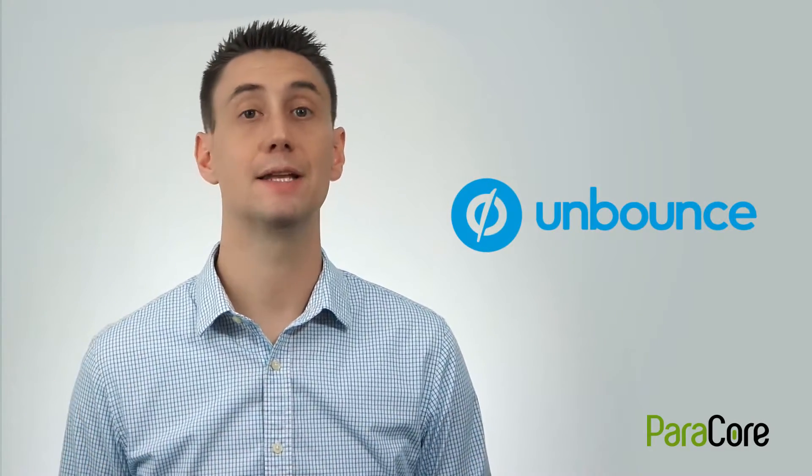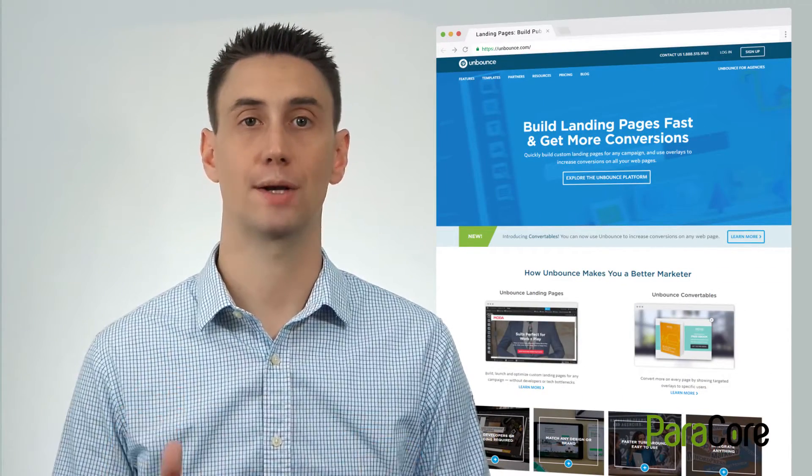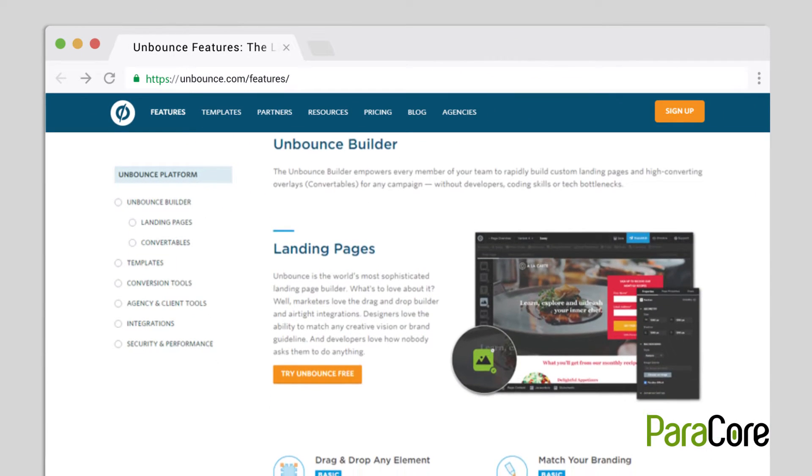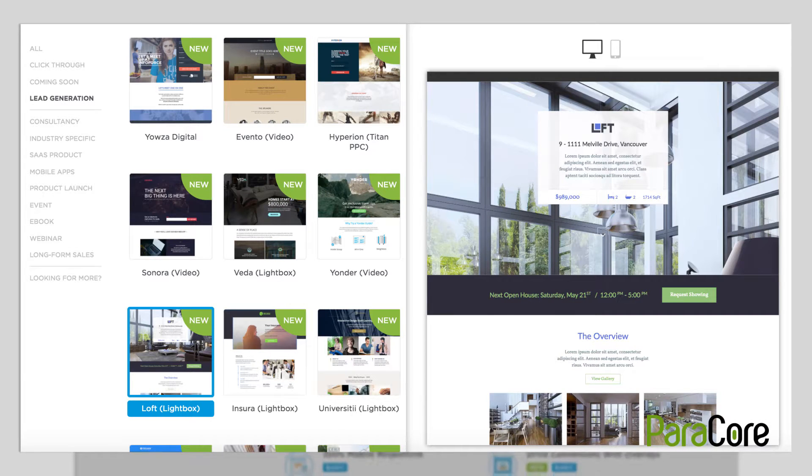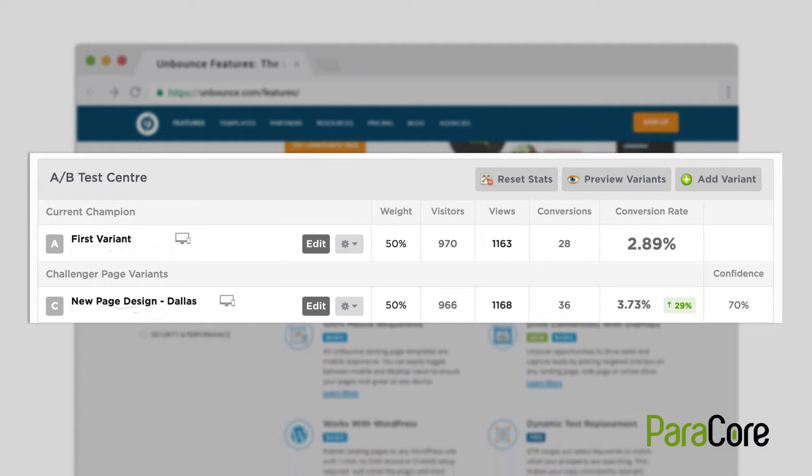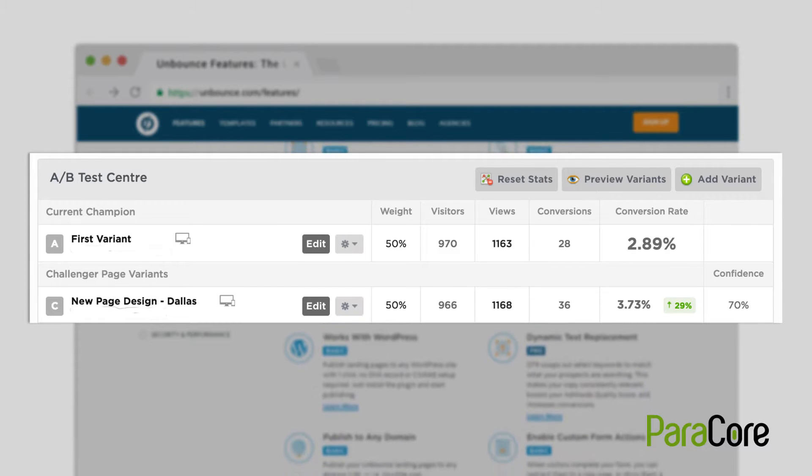Luckily, there's an easy solution called Unbounce. Unbounce is a landing page builder whose purpose is to build conversion-optimized landing pages quickly and easily. If you go to unbounce.com/features, you'll see a complete overview of all the features they offer. For example, it offers a drag-and-drop interface, it has pre-built templates to quickly launch pages, you can set up A-B tests easily and quickly, and it lets you instantly duplicate pages for other products or services. And none of these features require the use of a developer.